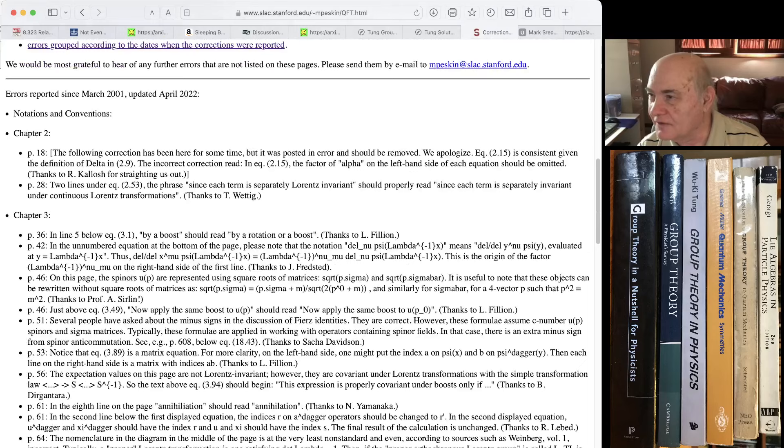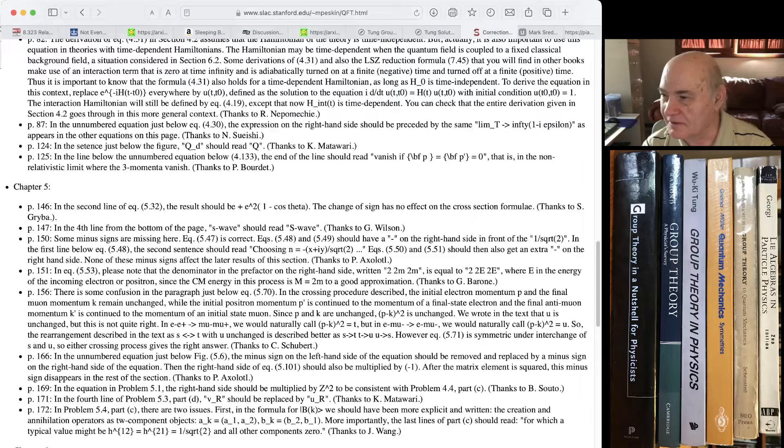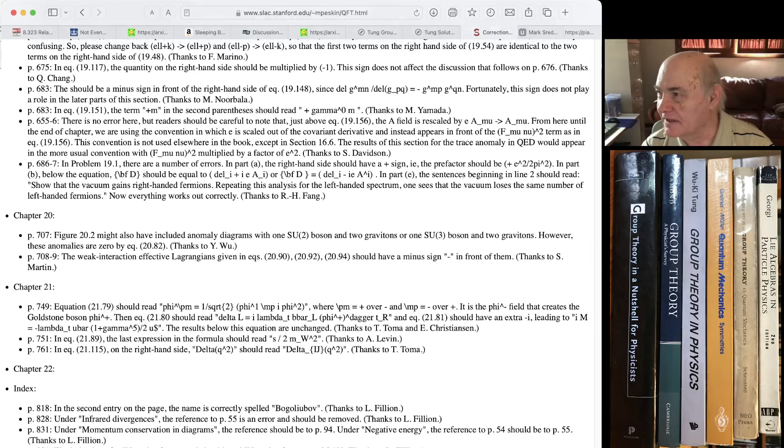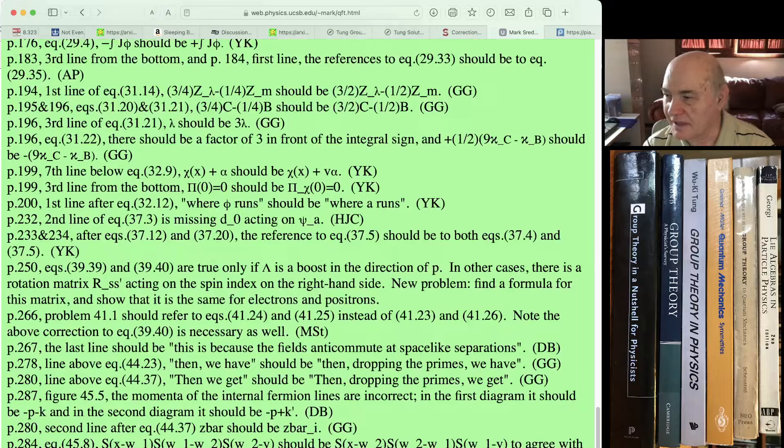Here's, like, Peskin and Schroeder. This was updated, this was corrected, and then, you know, since then, look at all these updates and corrections, and then, like, Mark Srednicki's quantum field theory book, same thing. Look at all these errata. You know, it's just a normal thing in a textbook.